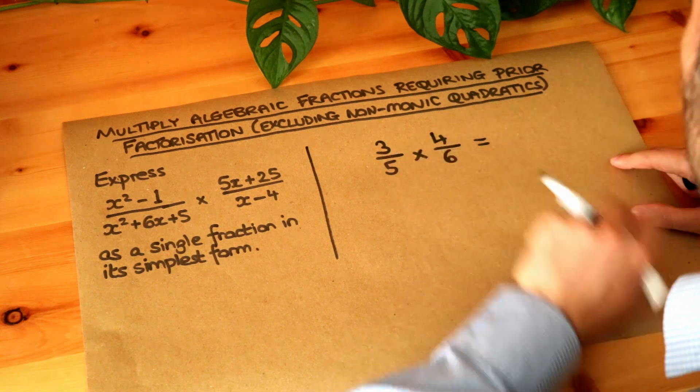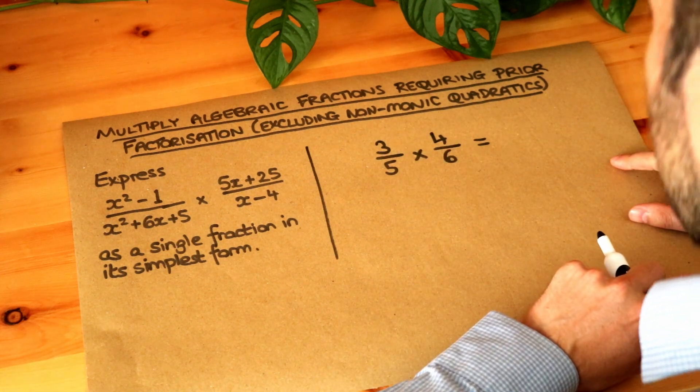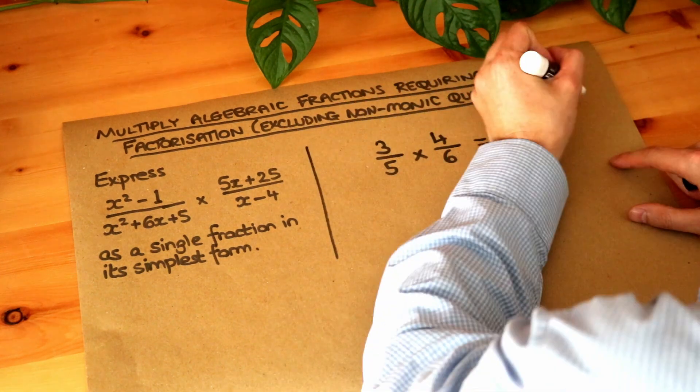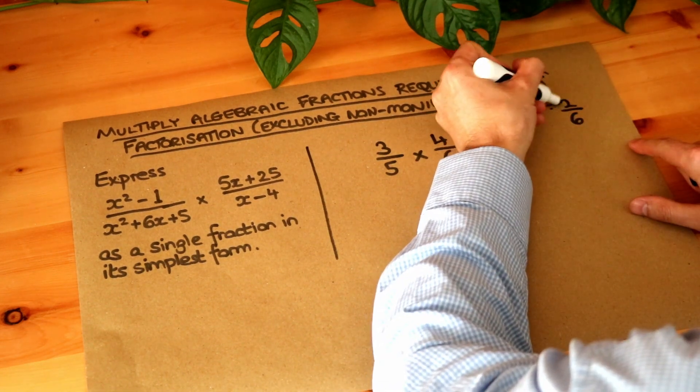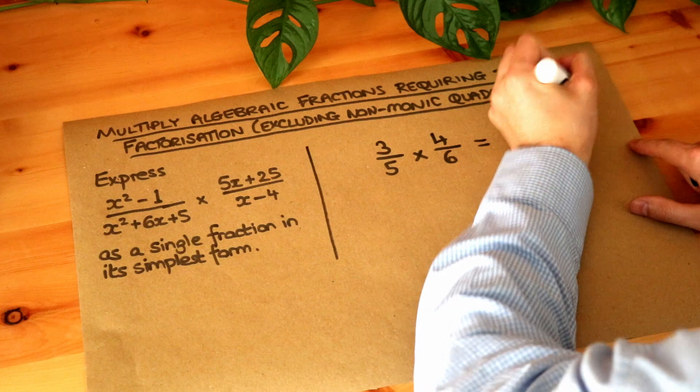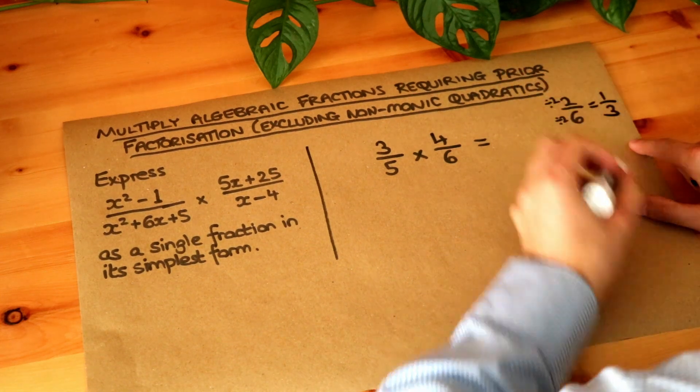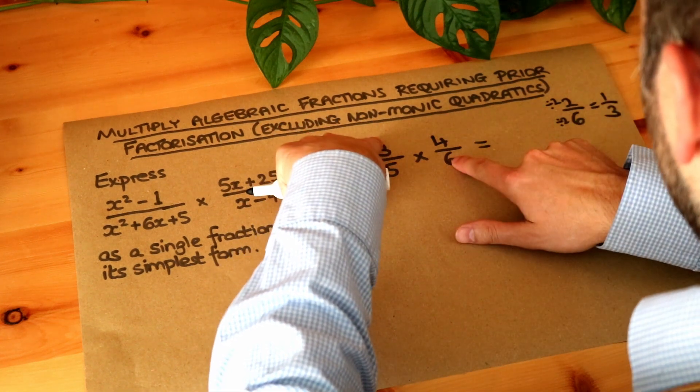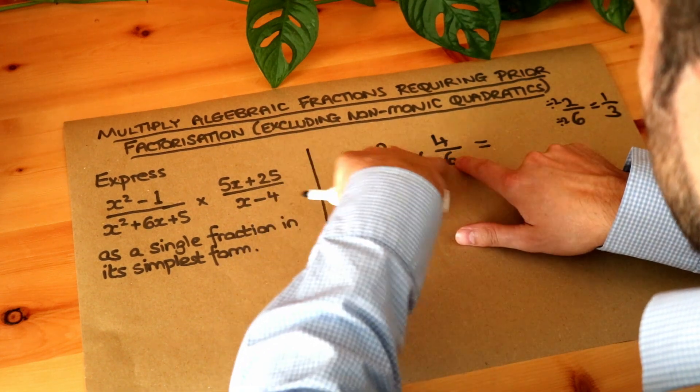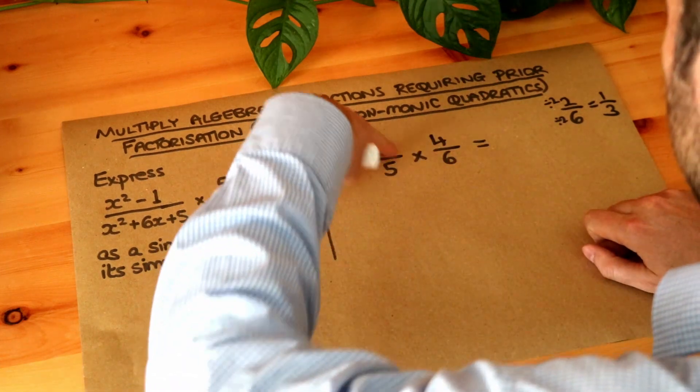But you may also know that before we multiply these together we can do something called cross-cancelling. Now we know in a fraction like 2 over 6 we can divide top and bottom of that fraction by the same number. So we can divide top and bottom by 2 to simplify it to get a third. But we can actually divide top and bottom where we're in the numerator of one fraction but the denominator of the other fraction. So we can do it diagonally as well rather than just vertically.